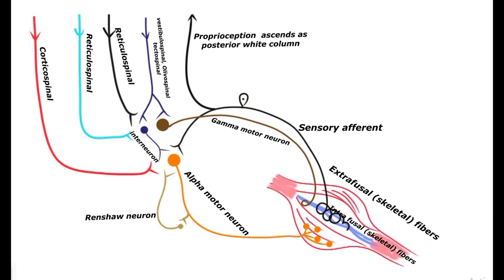The Renshaw neuron is an inhibitory neuron that emerges in between the alpha motor neurons. The collateral of the alpha motor neuron ends on the Renshaw neuron, which in turn inhibits the alpha motor neuron for precise action potential delivery to the contractile muscle fibers. This is how the alpha motor neuron is directly influenced by the corticospinal tract and modulated by other descending tracts and interneurons in the anterior gray horn.